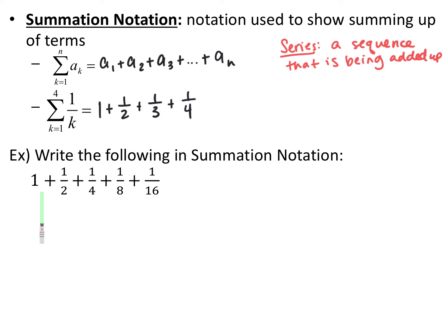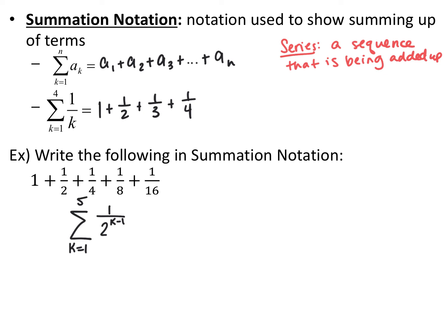So now we want to go the other way: we have a sequence and we want to write it in summation notation. Go ahead and pause the video and try that. So I have my sigma — we always start at k equals 1 unless you know otherwise. I'm going up to the fifth term, so from k equals 1 to 5, and then find the nth term of the sequence, which is 1 over 2 to the k minus 1.